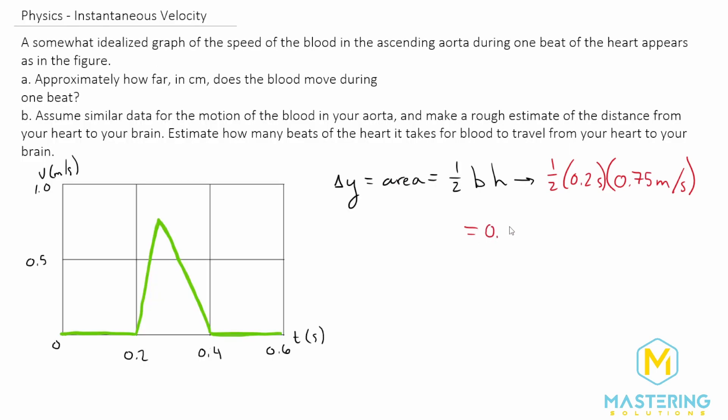So 0.075, and what is that? The seconds cancel, so we are in meters. But they want it in centimeters, so if we move the decimal place over 2 for 100, that is 7.5 centimeters for how far it moves up the ascending aorta in one beat. So that was part A.